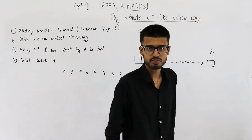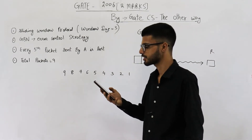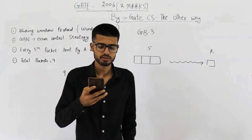Hello students, welcome back. This 2-marks question is from the GATE 2010 exam. They are saying station A needs to send a message consisting of 9 packets to station B using a sliding window with window size of 3 and Go-Back-N error control strategy. All packets are ready and immediately available for transmission. If every fifth packet that A transmits gets lost, but no acknowledgements from B ever get lost, then what is the number of packets that A will transmit for sending the message to B?